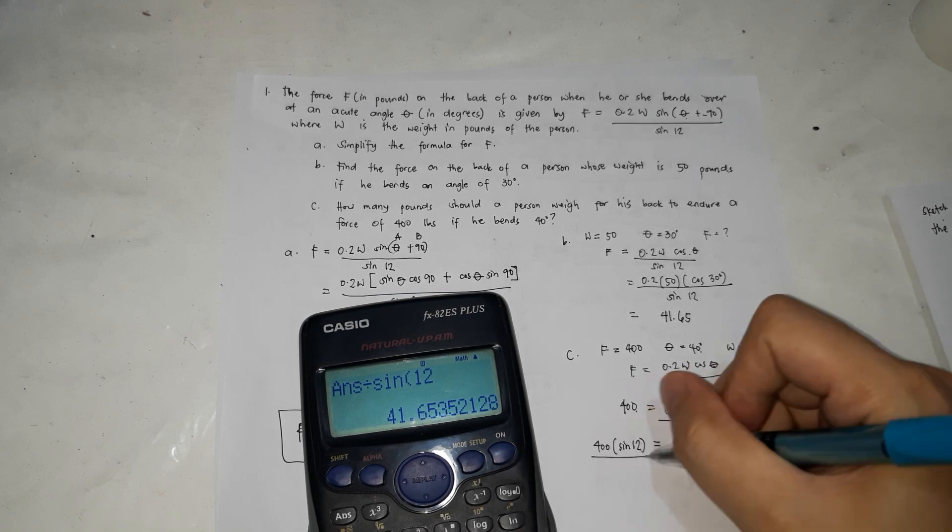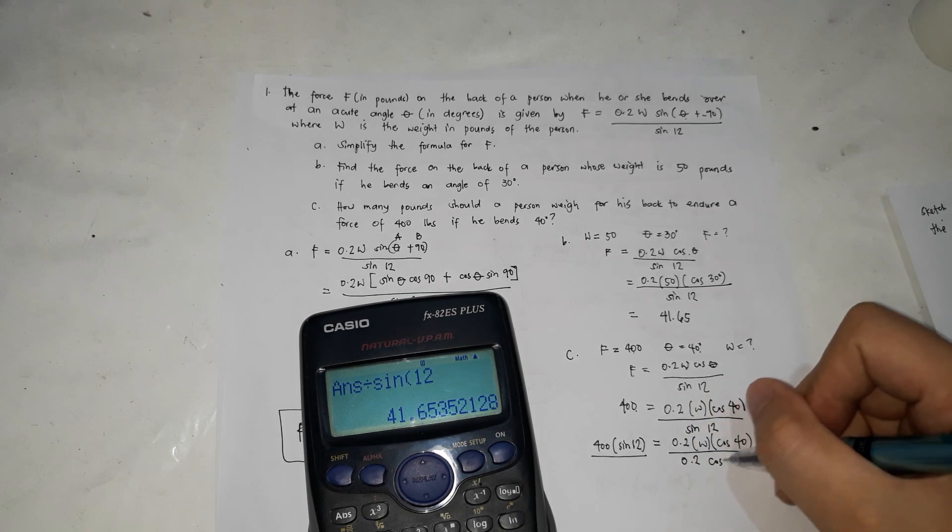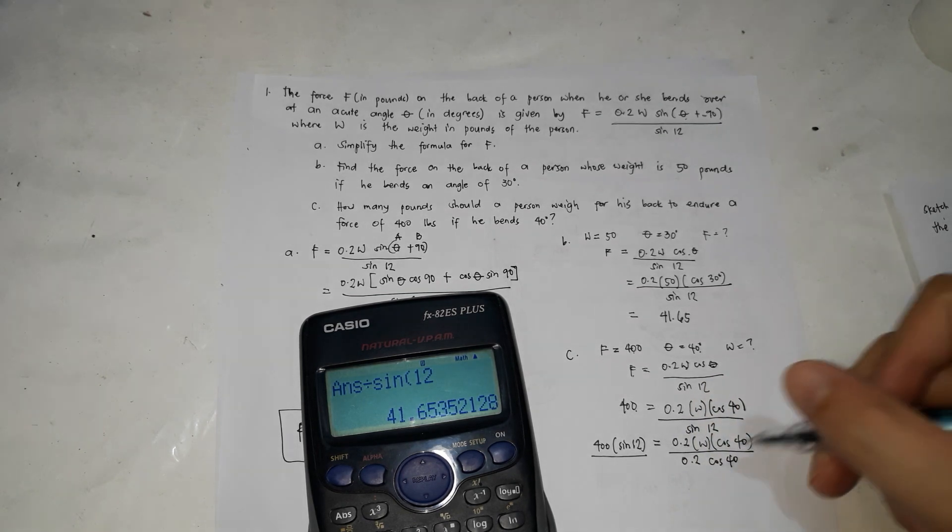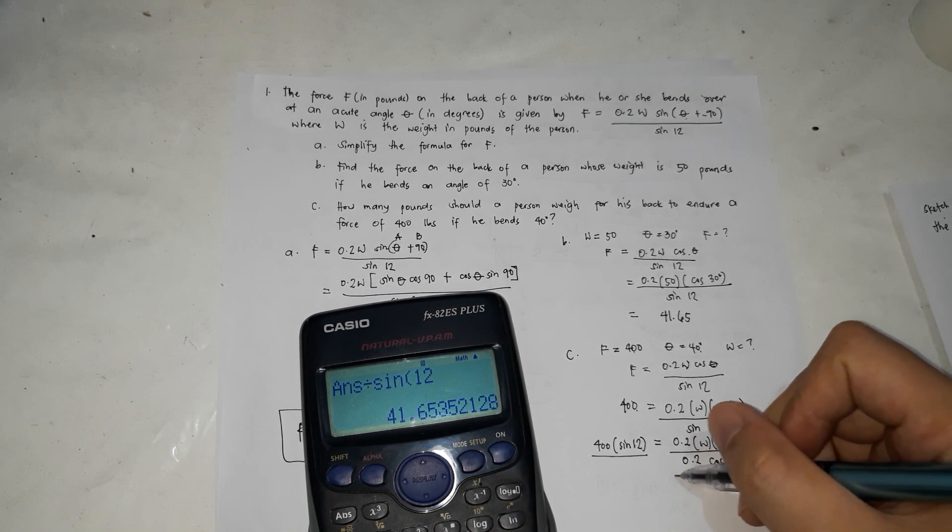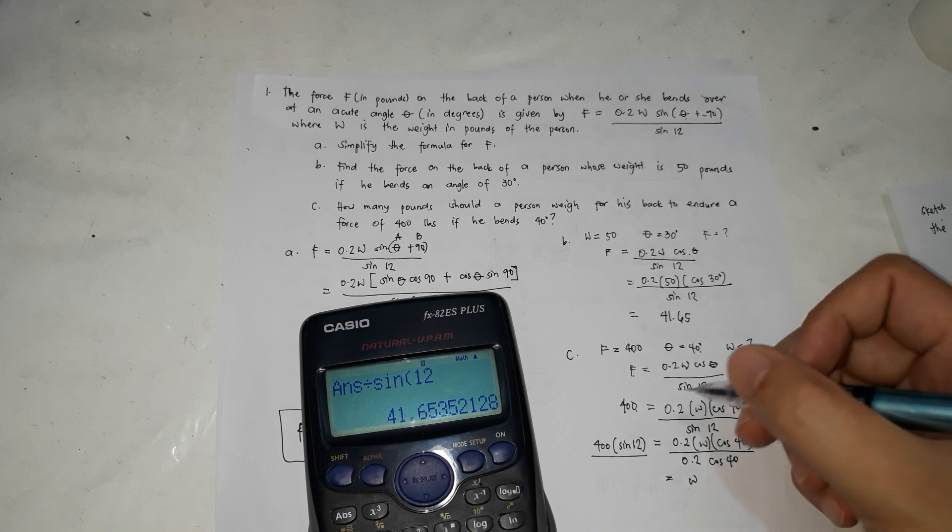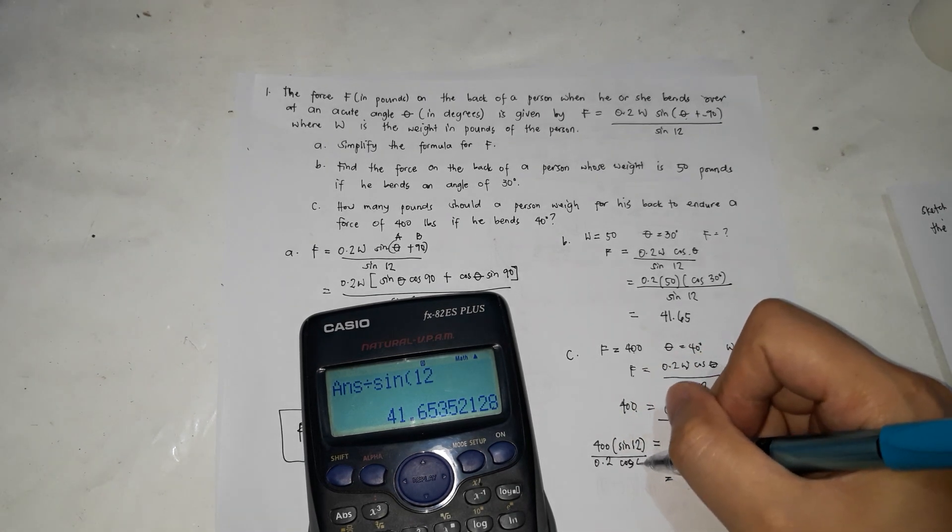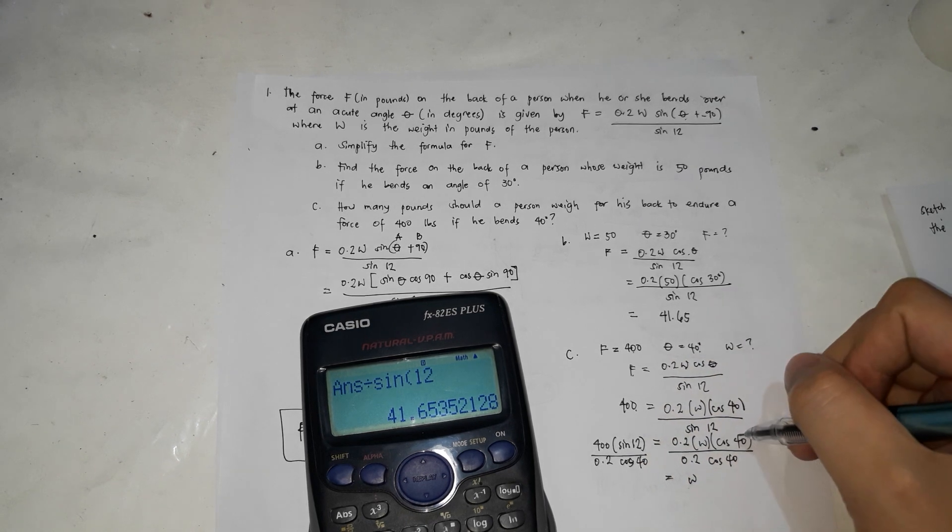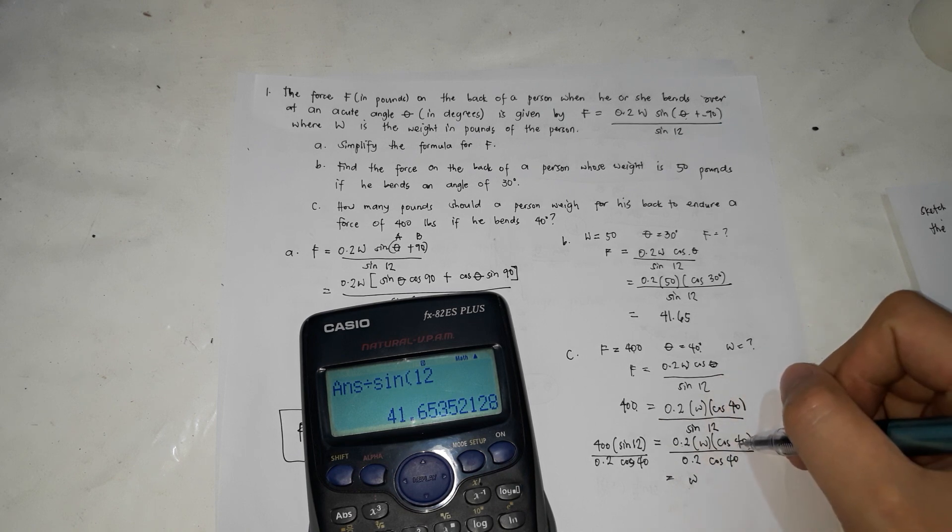We could divide both sides by 0.2 cosine 40 so that we could cancel them and isolate W. We're not going to estimate the intermediate values because there's a possibility the answer will be off. So instead, we're just going to keep this as is, just like sine 12, we didn't estimate it.